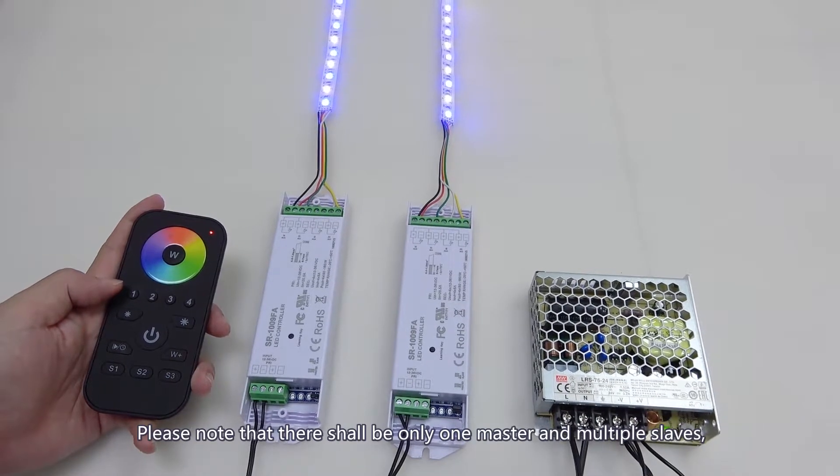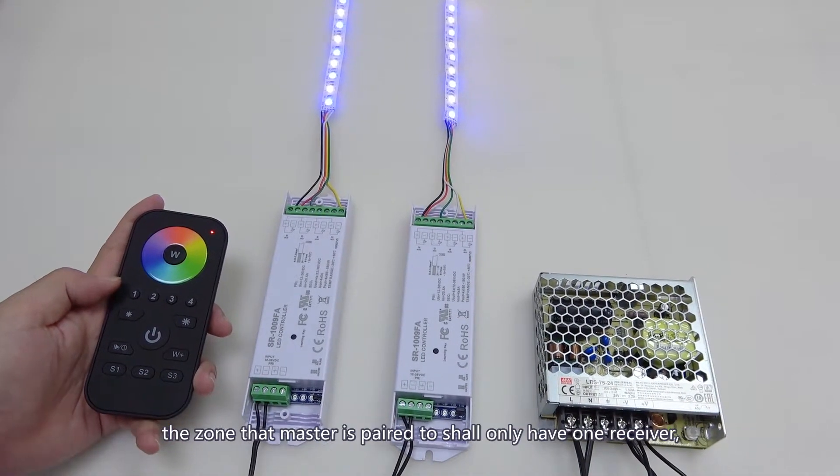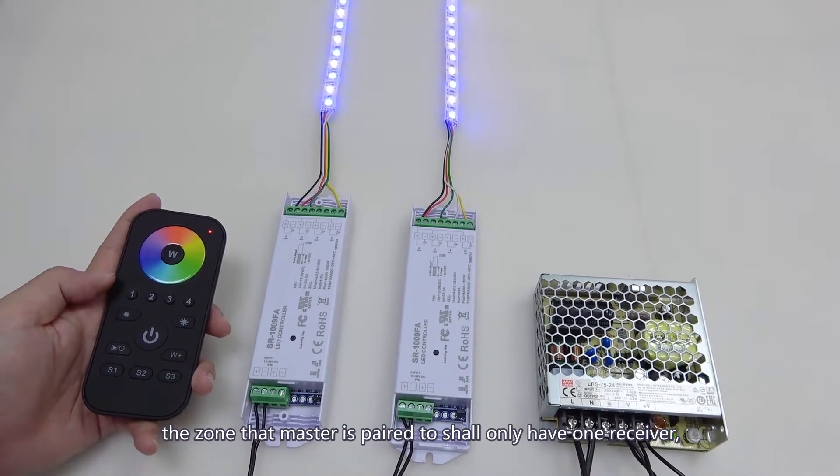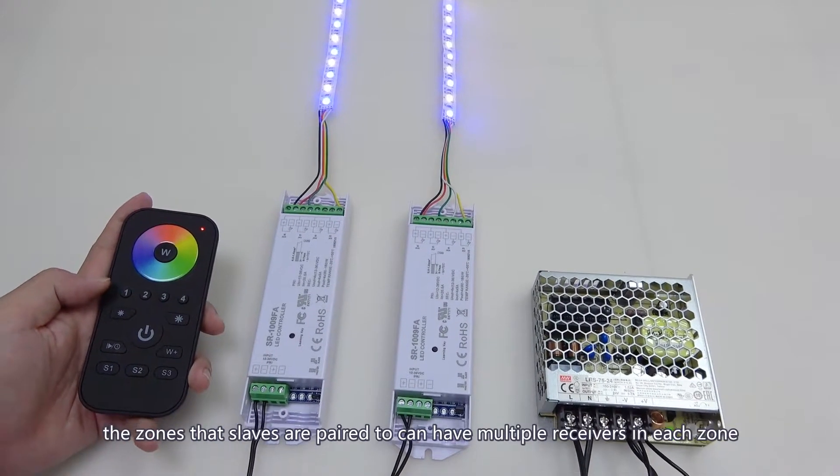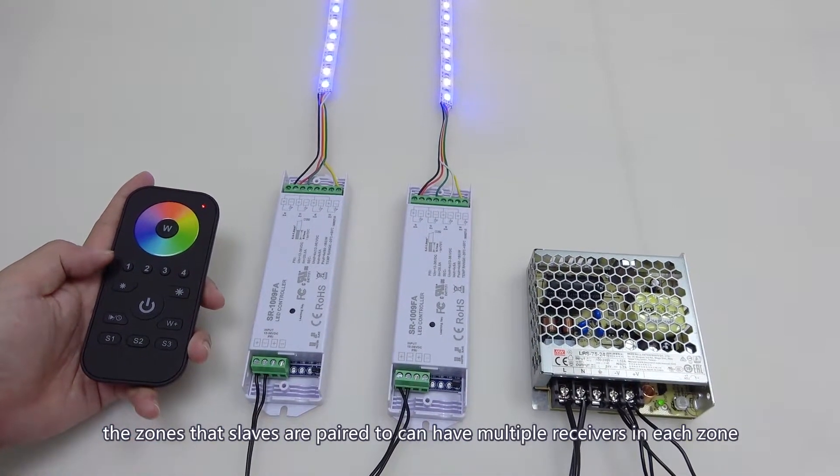Please note that there shall be only one master and multiple slaves. The zone that master is paired to shall only have one receiver. The zones that slaves are paired to can have multiple receivers in each zone.